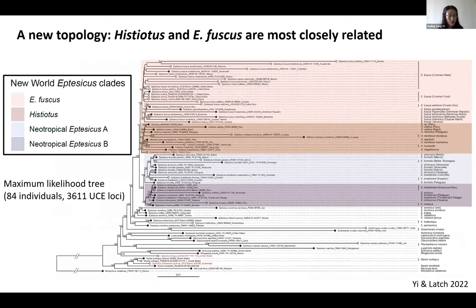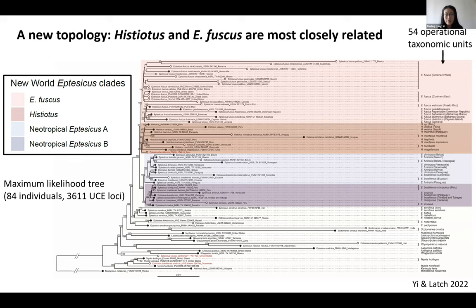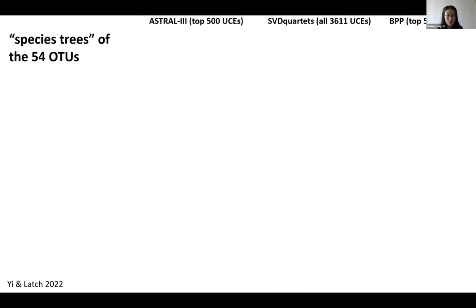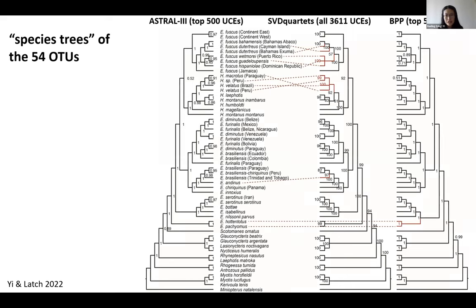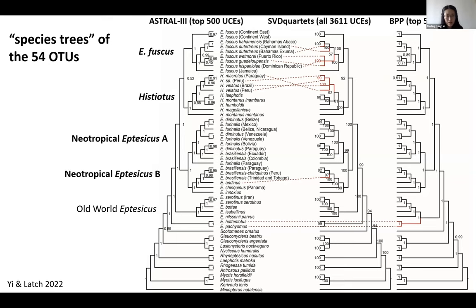I constructed a maximum likelihood tree showing four major clades in the New World: Eptesicus fuscus in North America, Histiotis in South America, and two differentiated clades of Neotropical Eptesicus. Based on this maximum likelihood tree, I grouped individuals into 54 operational taxonomic units representing species, subspecies, or biogeographic lineages. I then constructed species trees using three methods — the summary method ASTRAL, SVDquartets, and the Bayesian method BPP. The three methods showed highly similar topologies, except for a few closely related lineages with discordant positions, possibly reflecting incomplete lineage sorting or recent gene flow. Interestingly, Old World Eptesicus were found paraphyletic in all topologies except the BPP tree.